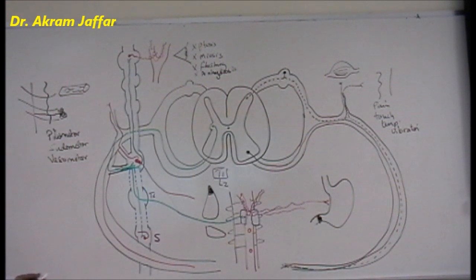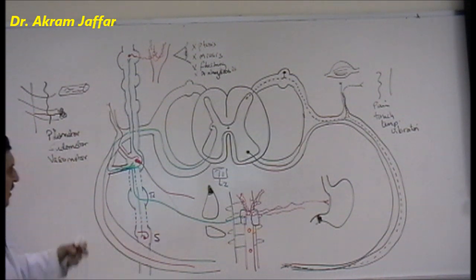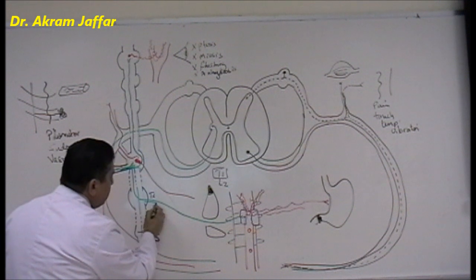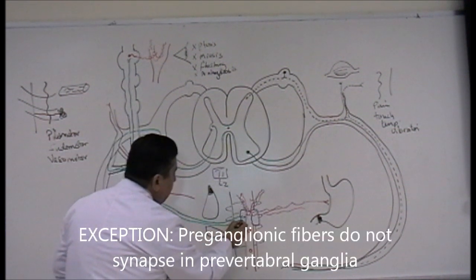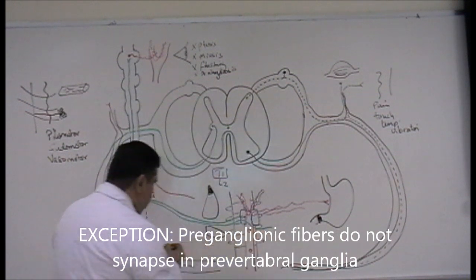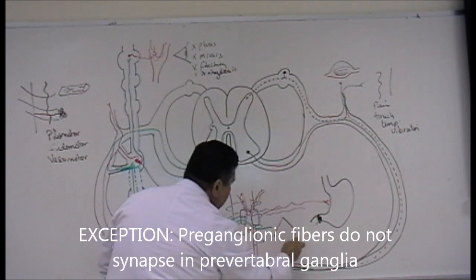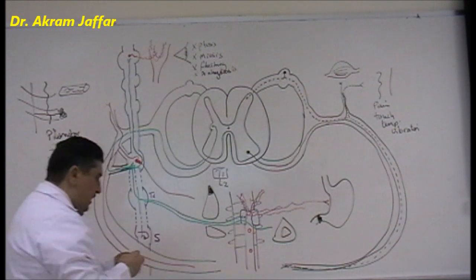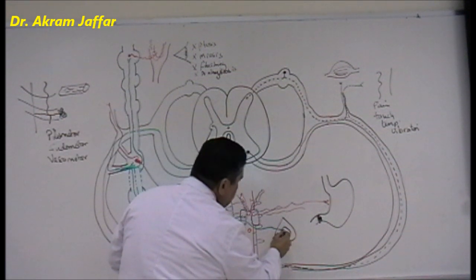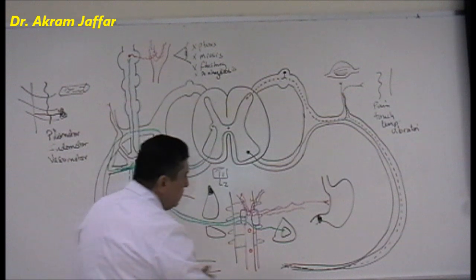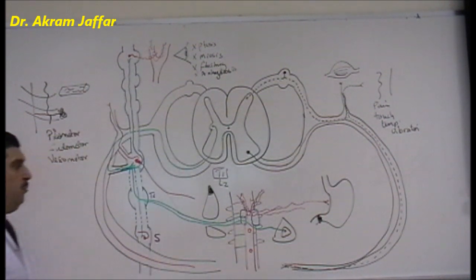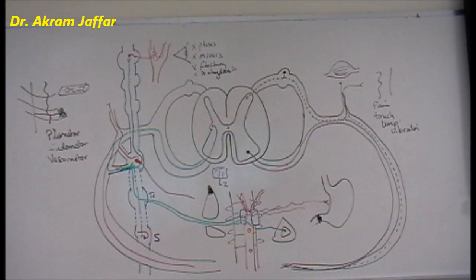There is one exception among these splanchnic nerve preganglionic fibers: they pass through the pre-vertebral ganglia without synapsing and travel directly into the adrenal medulla. It is in the adrenal medulla that they synapse onto cells considered as postganglionic cells. However, unlike typical postganglionic cells, these adrenal medulla cells release their neurotransmitter directly into the circulation.